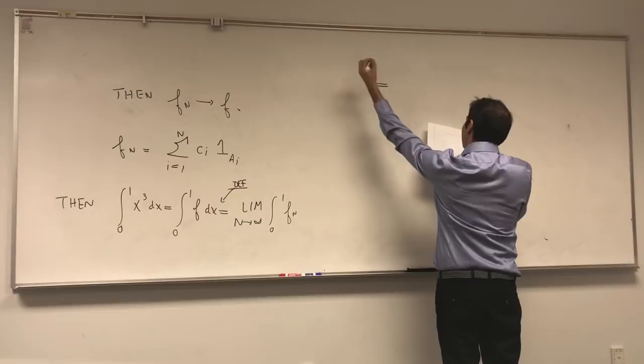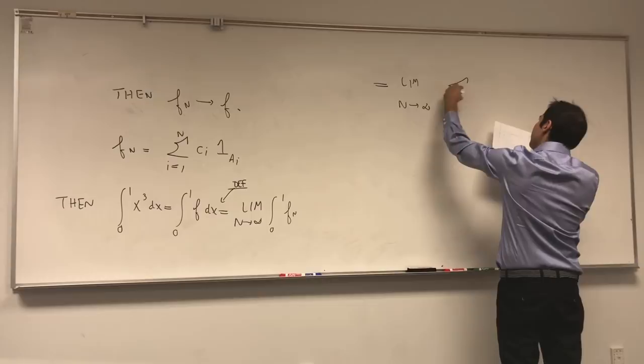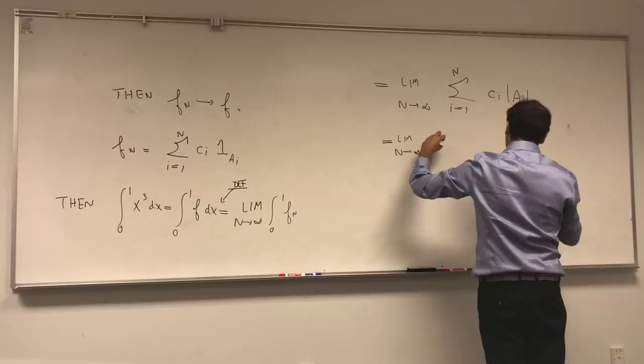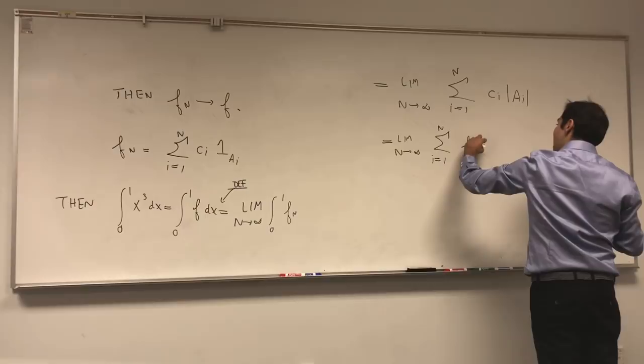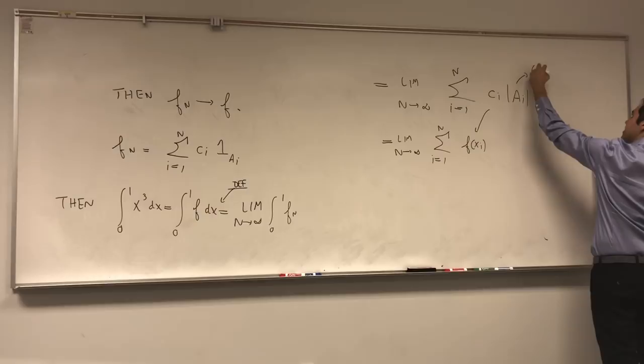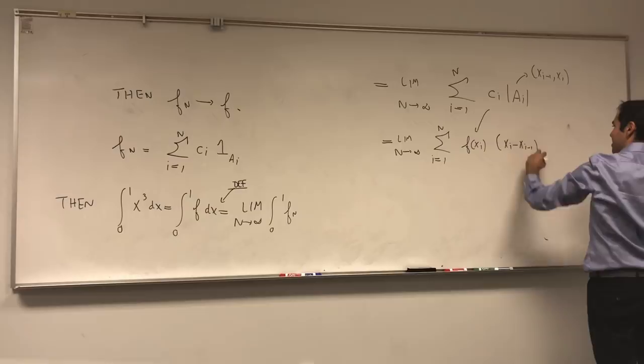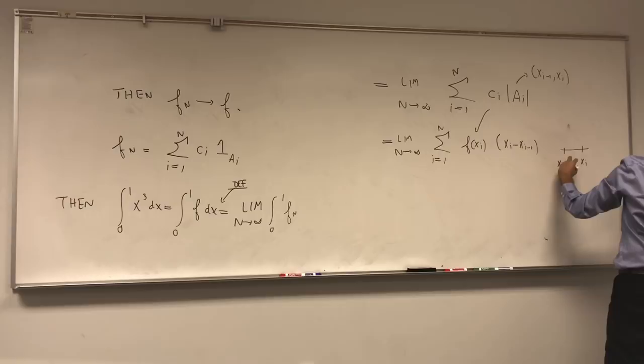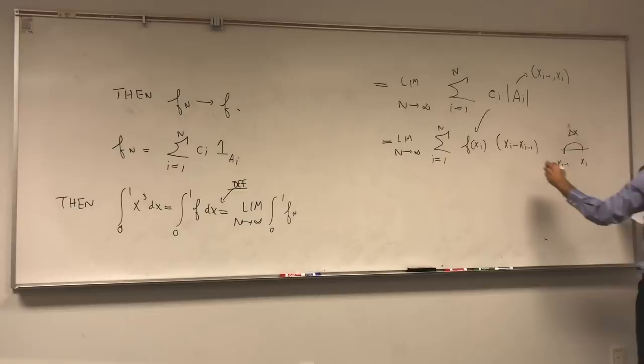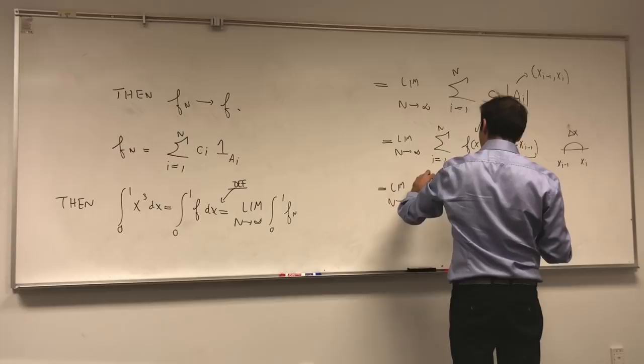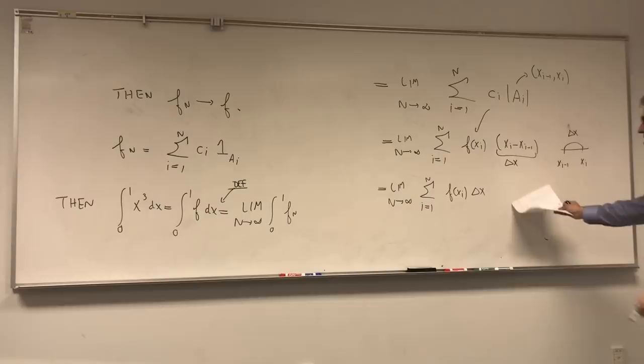You just take this value times the measure of this interval. So, this equals to limit n goes to infinity of sum from 1 to n of ci and the measure of ai, which is limit n goes to infinity of sum from 1 to n of the c value, ci, is f of xi, and ai, the measure is just the length of the interval, which is xi minus xi minus 1. But, the measure, the distance, is precisely delta x. So, what you're left with is limit n goes to infinity, sum from 1 to n of f of xi delta x, which is precisely the Riemann sum.